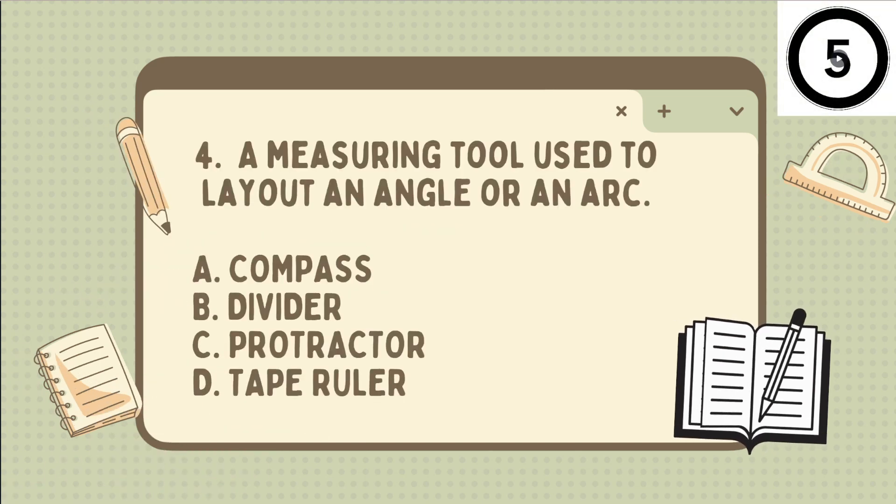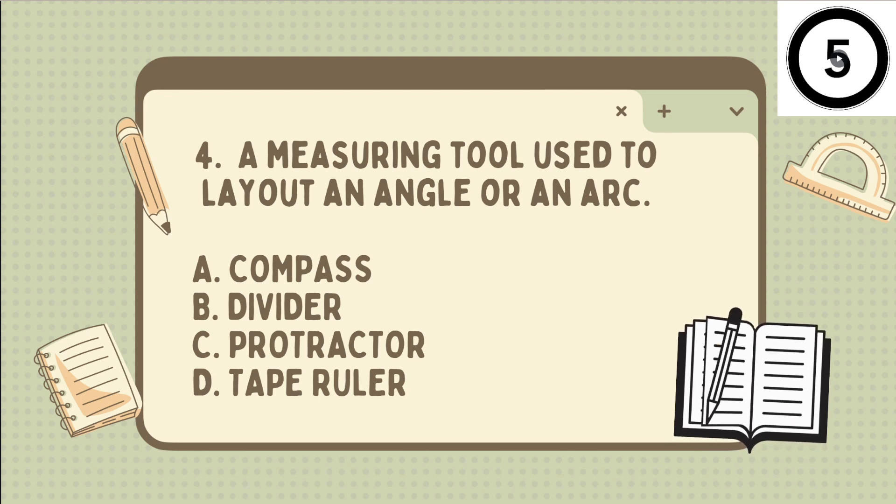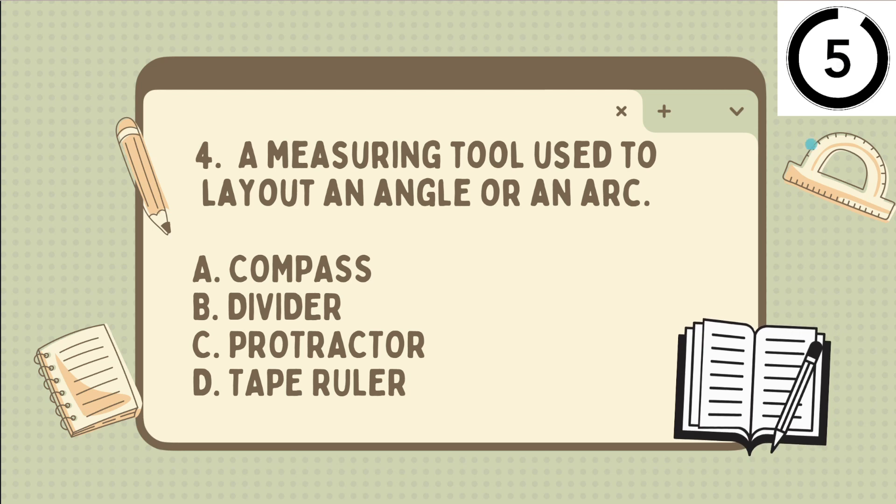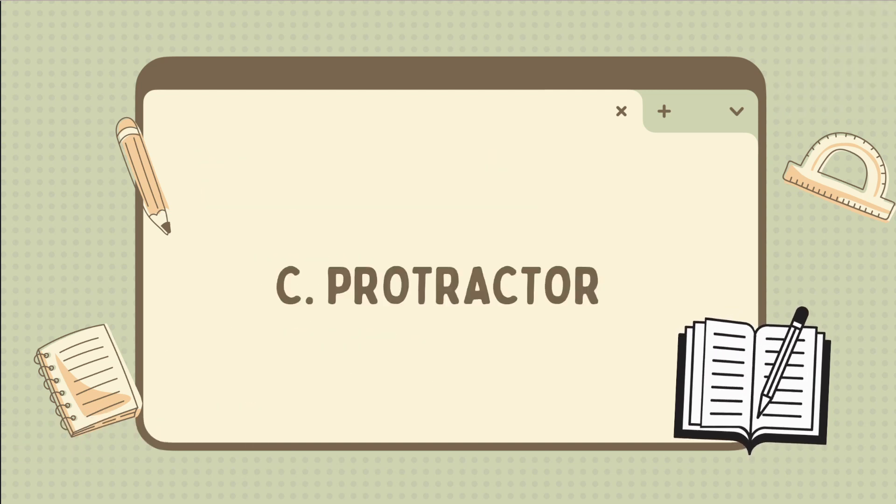Fourth one. A measuring tool used to lay out an angle or an arc. Is it A. Compass. B. Divider. C. Protractor. D. Tape ruler. The answer is... C. Protractor. Very good.